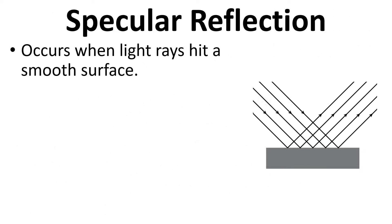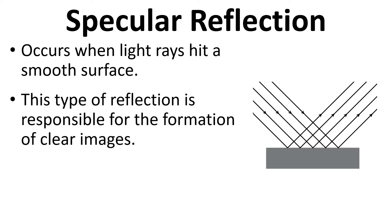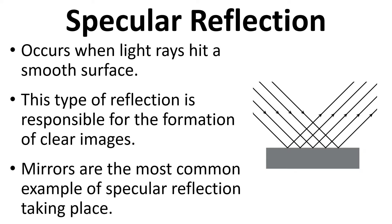Specular reflection occurs when light hits a smooth surface. This type of reflection is responsible for the formation of clear images and mirrors are the most common example where we obtain specular reflection.